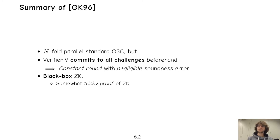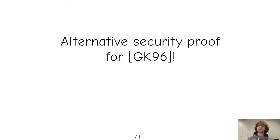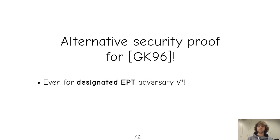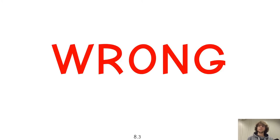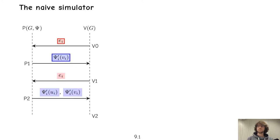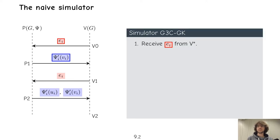We'll look at an alternative security proof which holds even for designated and expected-time verifiers. The proof is clean and simple — but it's wrong. Maybe you can spot the mistake already. The proof is based on the naive simulator, which is the straightforward choice.